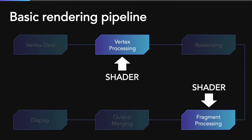Step 2 and step 4 could be controlled via a special type of code called a shader. The original word shading means using color and shapes to express the depth of 3D objects. The shader at the vertex processing step is called a vertex shader, and the one at the fragment processing step is called a fragment shader.